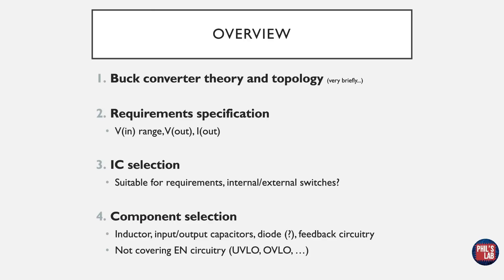Once we have our IC and requirements in place, we finally need to look at component selection. That means sizing the inductor appropriately, choosing input and output capacitors, possibly a diode if the IC requires it, as well as selecting feedback circuitry. We won't be covering the enable circuitry, for example when the switching regulator should turn on. There's typically features such as under voltage lockout and over voltage lockout, but we won't be looking at that in this video because that's fairly self-explanatory.